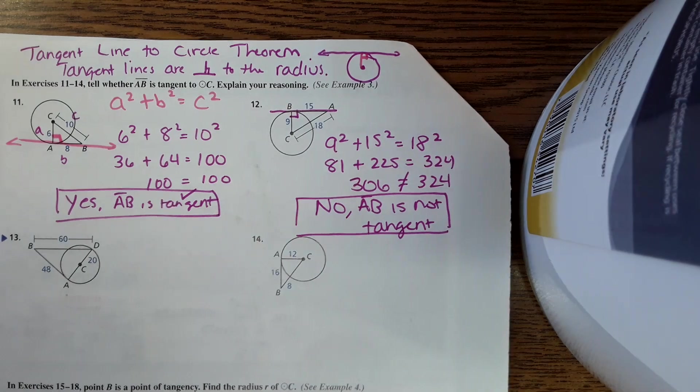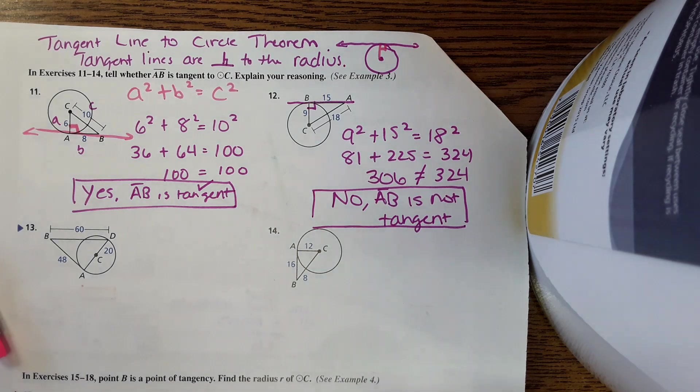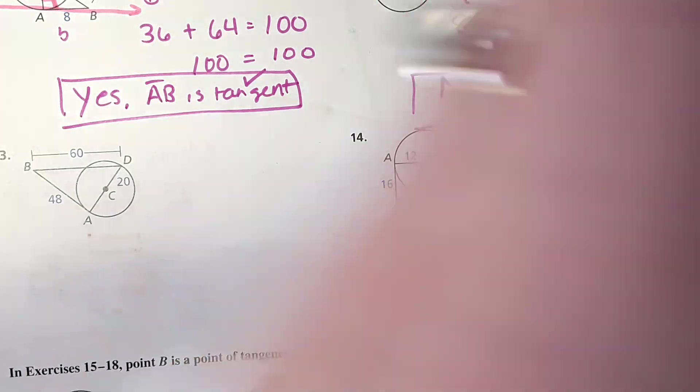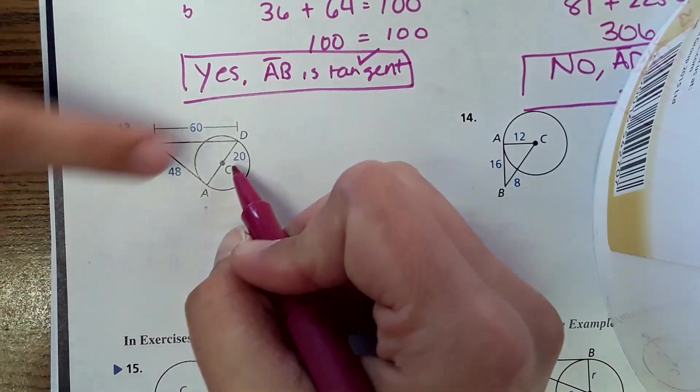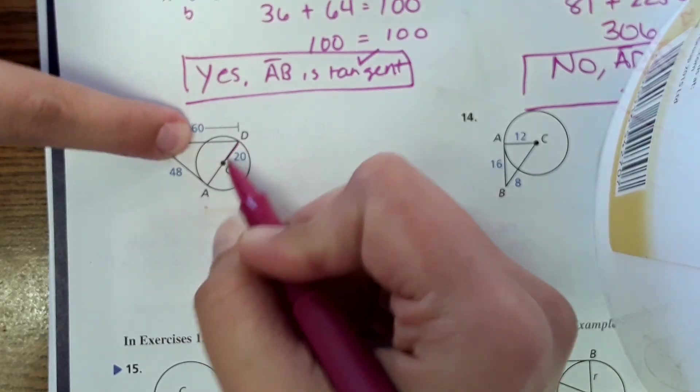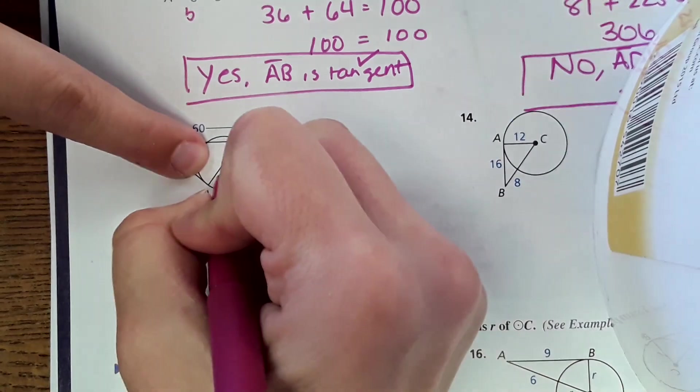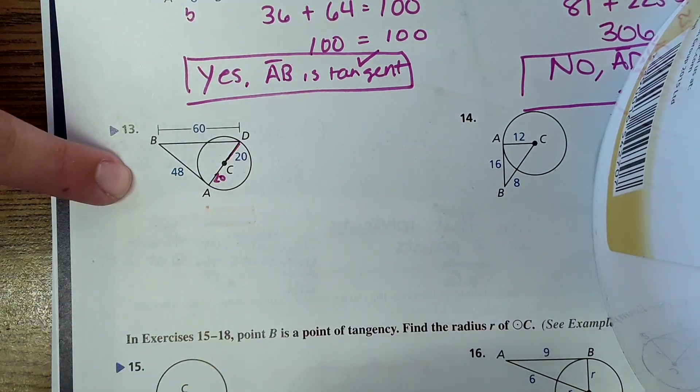And then I'm going to do one of these, either 13 or 14. So 13 and 14 are a little bit different than what we just did because they left a segment that's unlabeled. So here, they're saying that the radius is 20, but they don't give us the whole length of that segment. Well, if the radius is 20, this would also be 20. And so that whole thing would be 40.